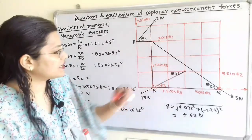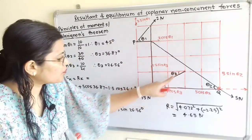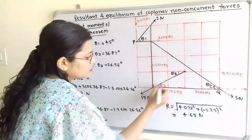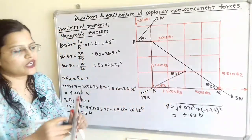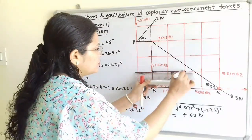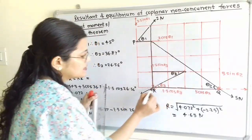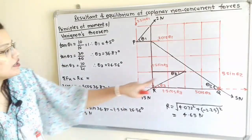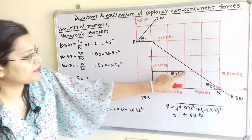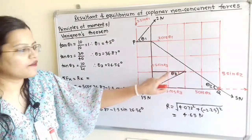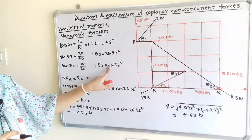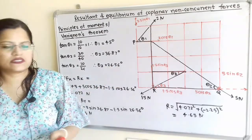Now we find θ3. Along the 1.5N force, we find the first and second corner points and join the sides. From this triangle, tan(θ3) equals opposite side (1 side = 10) divided by adjacent (2 blocks = 20), that is 10/20, so θ3 = 26.56°.